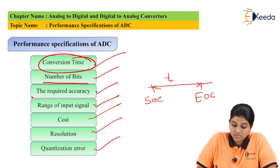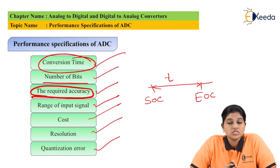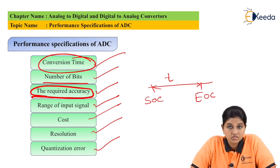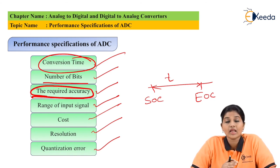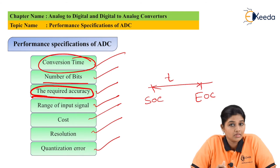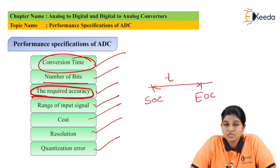The next parameter is required accuracy. Accuracy of the ADC plays an important role in any application. When analog signals are converted into digital signals, the analog signals are not accurately converted — they are approximated. If the approximation is not done properly, some error occurs. Therefore, it is very important to select the ADC on the basis of the accuracy requirement of the application.